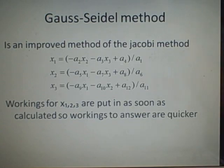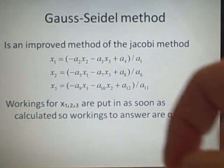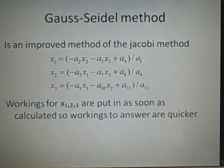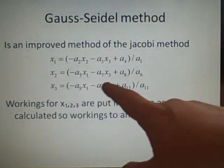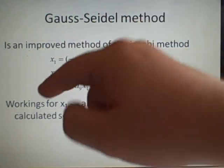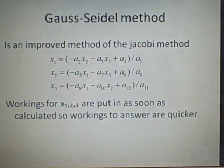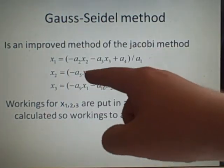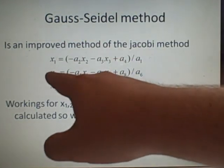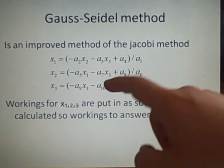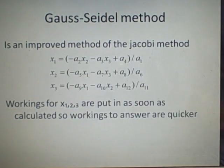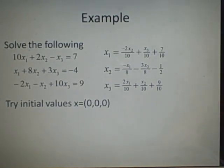The next method is the Gauss-Seidel method, which is much better than Jacobi because it converges quicker. Again we rearrange the equations for x1, x2, x3. The key difference is that as we compute a new value for x1, we immediately substitute that value into the equation for x2, and once we have x2, we substitute both x1 and x2 straight back into the equation for x3, giving better estimates at each step.